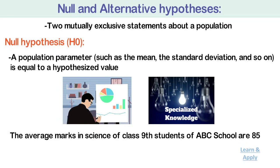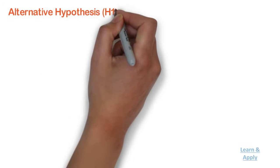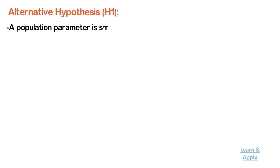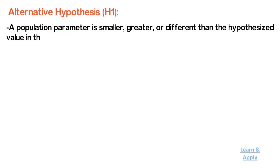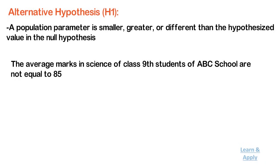Formally, this is written as H0: μ = 85. The alternative hypothesis, denoted as H1, states that a population parameter is smaller, greater, or different than the hypothesized value in the null hypothesis. In the above example, the alternative hypothesis is that the average marks in science of class 9 students of ABC school are not equal to 85. Formally, this is written as H1: μ ≠ 85.